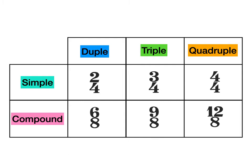Same for the triple: 3/4 is our simple time signature and 9/8 is our compound time signature. And finally, our quadruple time signatures: 4/4 is our simple time signature and 12/8 is our compound time signature.